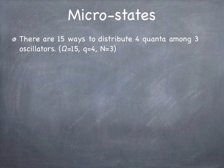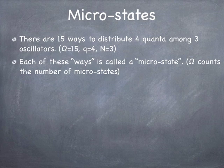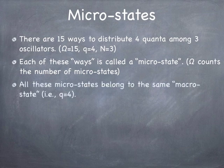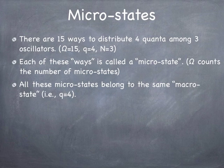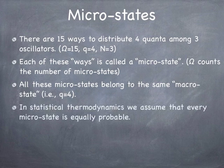The variables we're going to use are: omega (Ω), the number of ways; q, the number of quanta; and n, the number of oscillators. Each of these 15 arrangements is called a microstate — a microscopic distribution different from the others but all sharing the same total energy of four quanta. The fact that there are four quanta defines the macrostate. In statistical thermodynamics, we assume every microstate is equally probable, so if you wait long enough, they'll all be visited with equal likelihood.